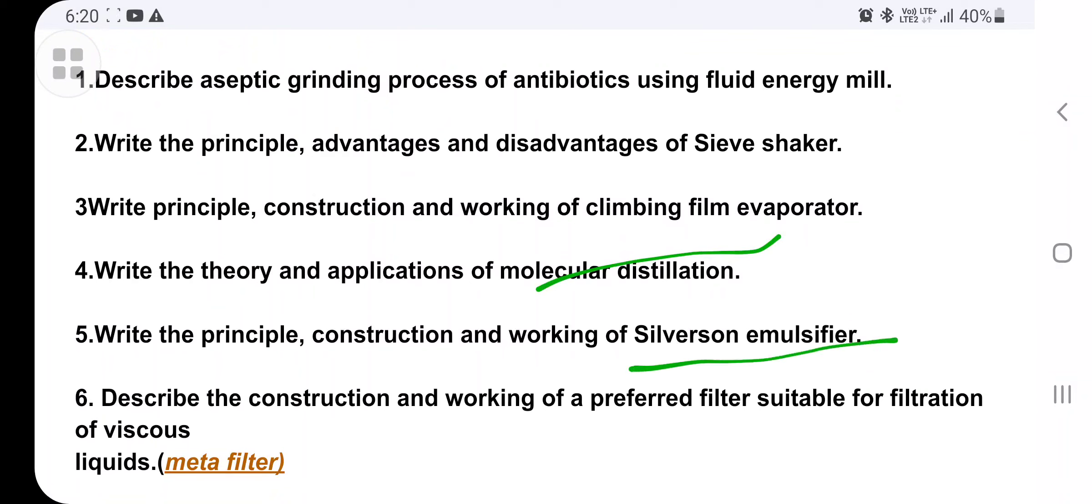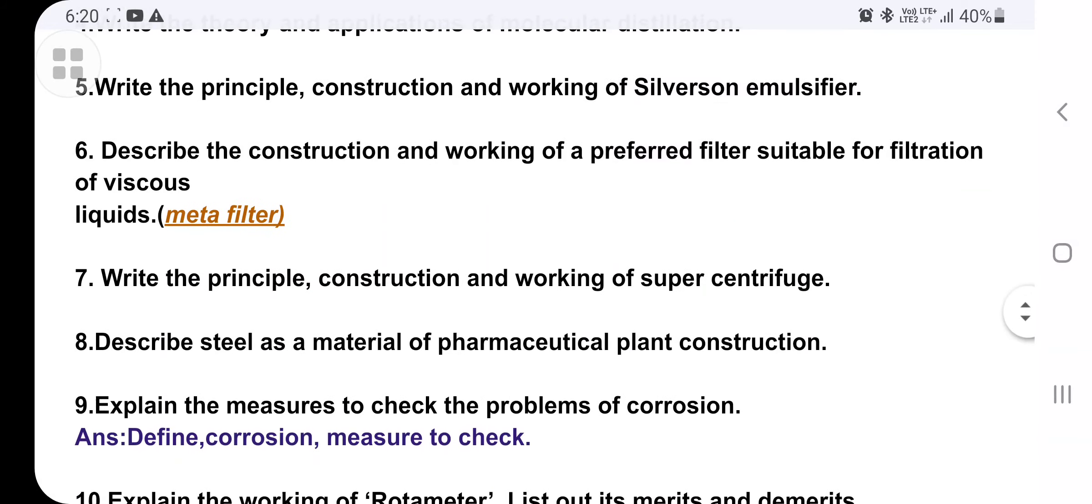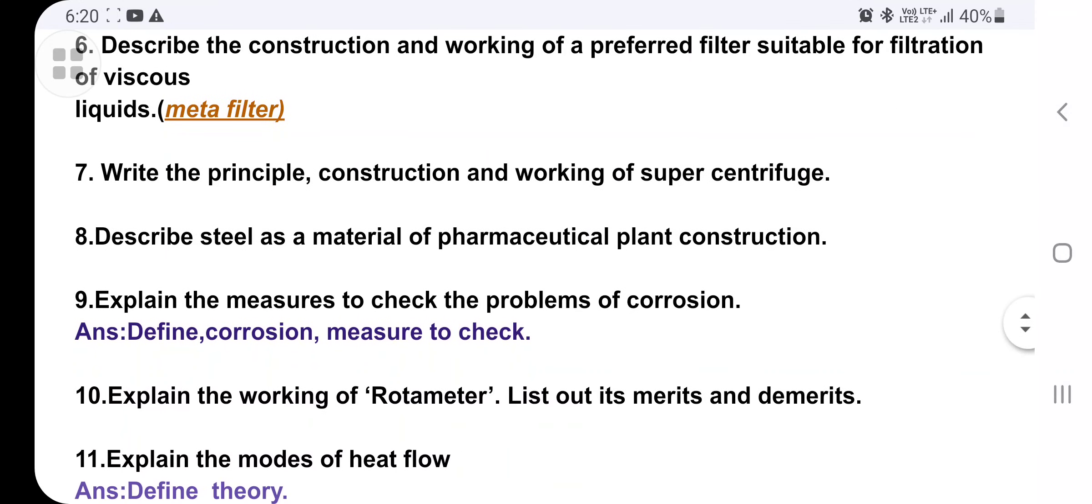Principle, advantage and disadvantage of shiv shaker, film evaporator. Then molecular distillation, principle, construction, working of silvers emulsifier. Then meta filter - construction working of preferred filter suitable for filtration of viscous liquids like syrup, suspensions. For this, which type of filters you are using? Meta filters. Principle, construction, working of super centrifuge, very important one.